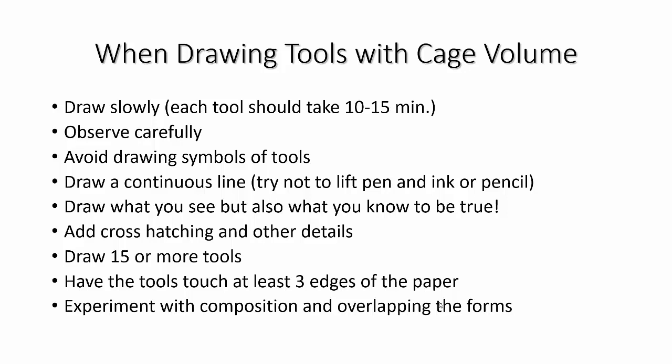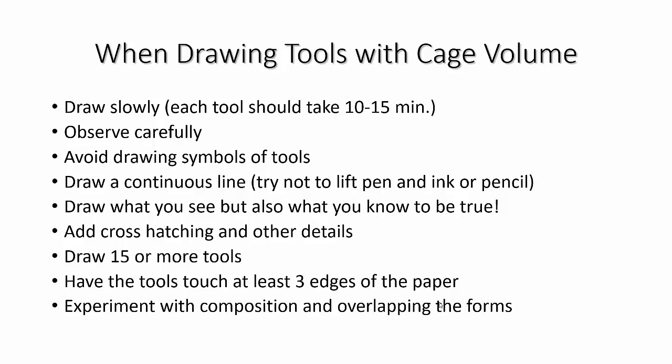And draw 15 or more tools. So you want to draw on a large sheet of paper. 18 by 24 is typically what we work with in the drawing class. But if you have like 11 by 15 or something half that size, like 12 by 24, we could deal with that. Have the tools touch at least three edges of the paper. I'll explain it in a sec. But you want them to touch the actual edge. And then experiment with composition, how you overlap the forms.